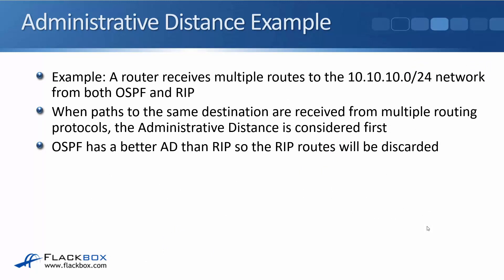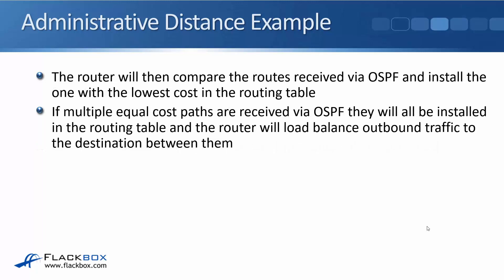Let's say a router receives multiple routes to the 10.10.10.0/24 network from both OSPF and RIP. When paths to the same destination are received from multiple routing protocols, the administrative distance is considered first before the metric. OSPF has a better administrative distance than RIP, so the RIP routes are discarded. Then the router compares the routes received via OSPF and installs the one with the lowest cost into the routing table. If multiple equal-cost paths are received, they'll all go into the routing table and the router will load balance between them.